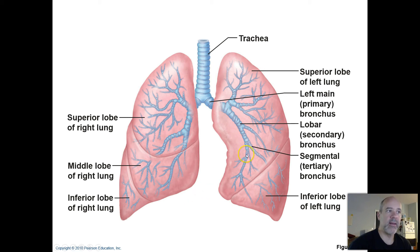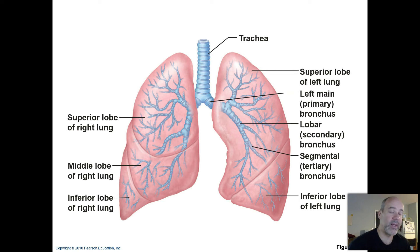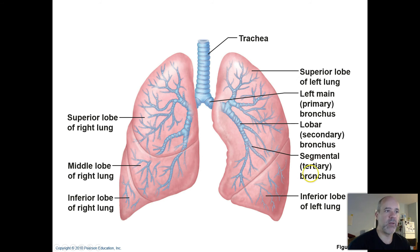Those bronchi divide into smaller tertiary, third-level bronchi. It looks just like a tree — some people call this the respiratory tree or the bronchial tree — because this is distributing air throughout all parts of the lungs. These smaller bronchi that spread out into different locations of each lobe of the lungs are called the tertiary bronchi.